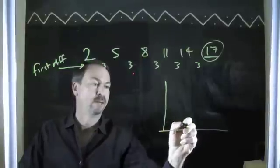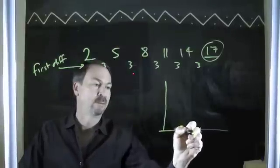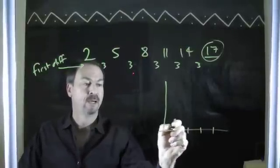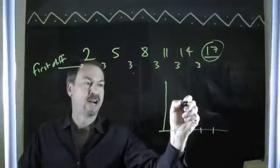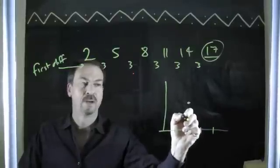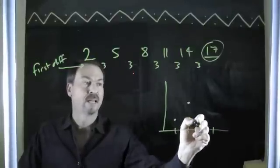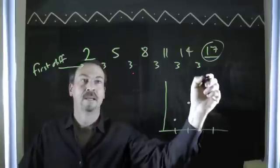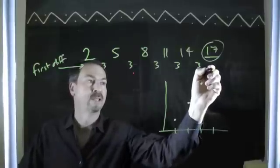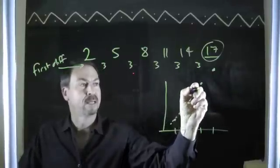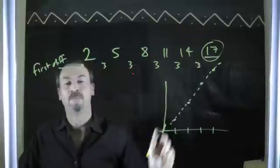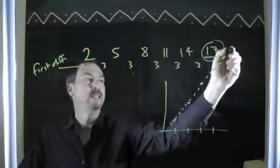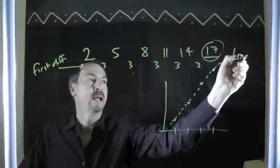So here's a little graph: 1, 2 — the first number, second number, third number, fourth number, fifth number. So the first number is 2, go over 1, the next number is 5 — that's 1 over and up 3. The third number is 8, which is over another 1 and up another 3. The next number is 11, and so on. It's not surprising we get a nice linear picture. So a sequence with constant first differences is called linear.